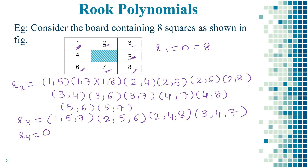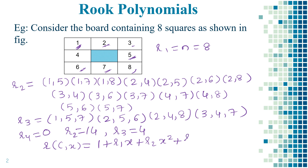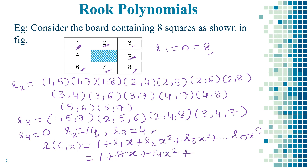So we have calculated R2 is equal to 14 ways, and R3 is equal to 4. The generalized formula for the rook polynomial is given by R(C, x) = 1 + R1·x + R2·x² + R3·x³ + ... + Rn·xⁿ. For the given board this becomes 1 + 8x + 14x² + 4x³. So this is the polynomial which can be calculated for the given board.